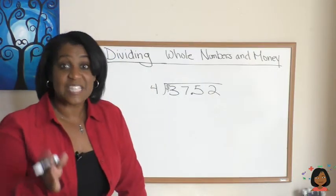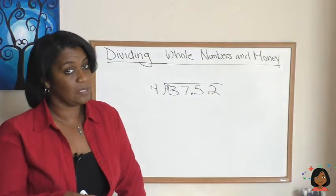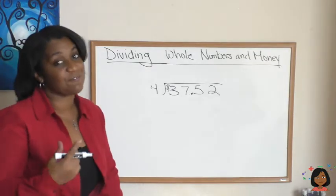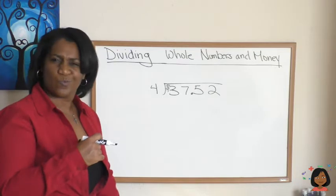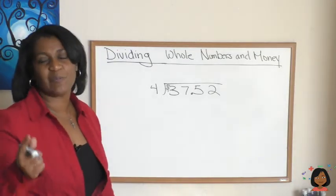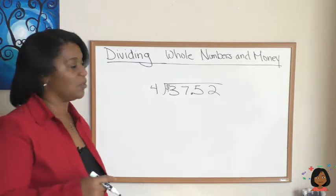Is there anything different that needs to happen when we're working with money? Let's take a look. I've got a problem here, 4 into $37.52. Hmm. Well, here's the rule. Do your division as normal, but then we will account for our dollar sign and decimals. Here we go.